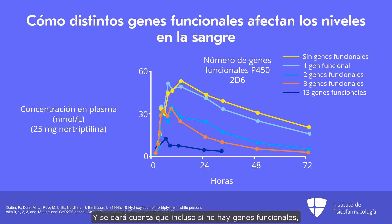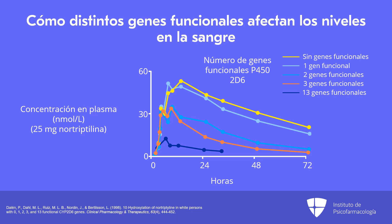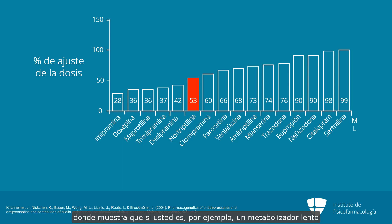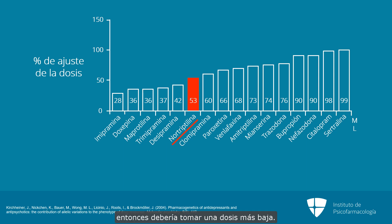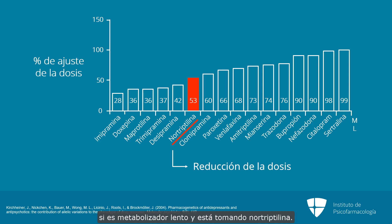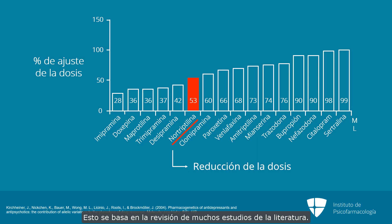For a person with no functional genes, almost half of that dose was still in their body three days later — though notably some of the medicine was still getting processed. Another study by Kirchheiner in 2004 did a literature review and produced a graph showing that if you are a poor metabolizer taking nortriptyline, you should take a lower dose — specifically about a 50% reduction — based on findings across many different studies.